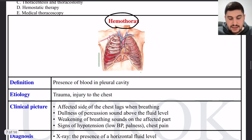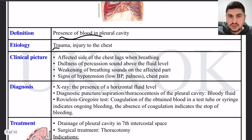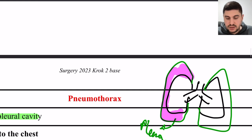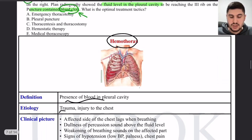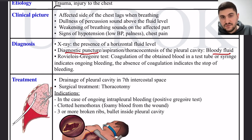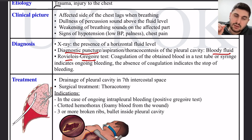Hemothorax presents with blood in the pleural cavity due to trauma. On X-ray, you will see a horizontal fluid level. On pleural puncture, bloody fluid is obtained. The Revilus test checks if the blood is coagulating inside the pleural cavity, which is important for treatment. If hemothorax is uncomplicated — no clots and no multiple broken ribs — it can be treated by drainage.